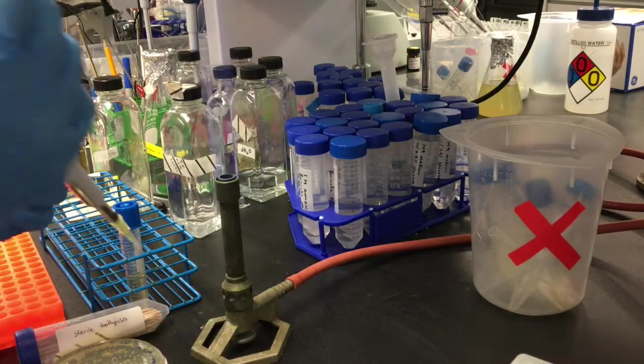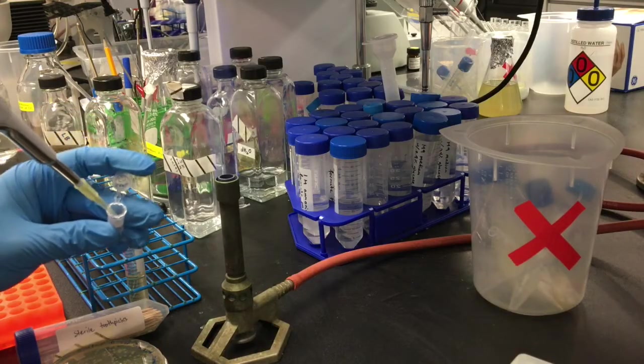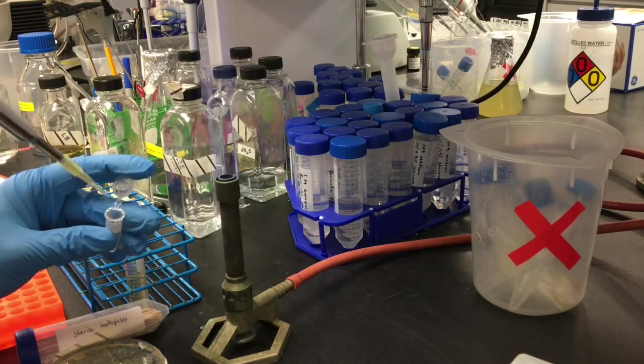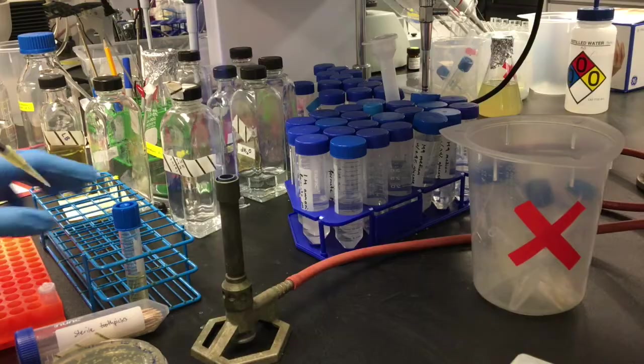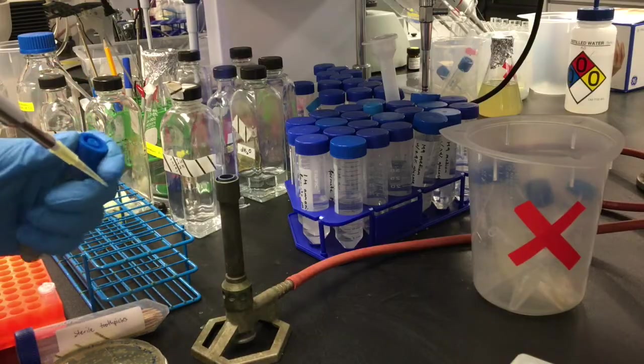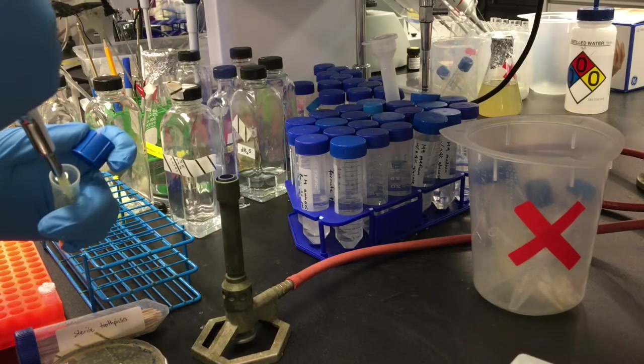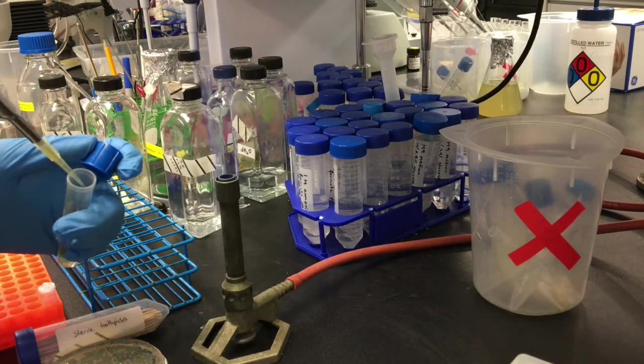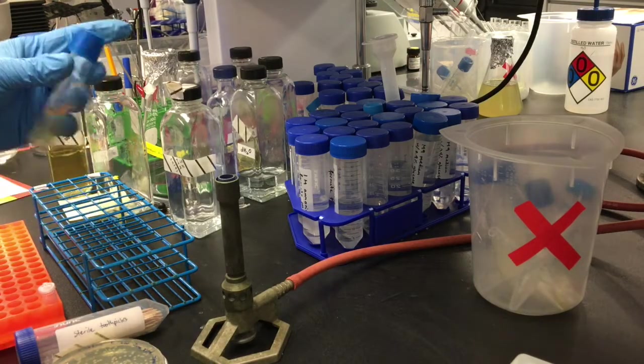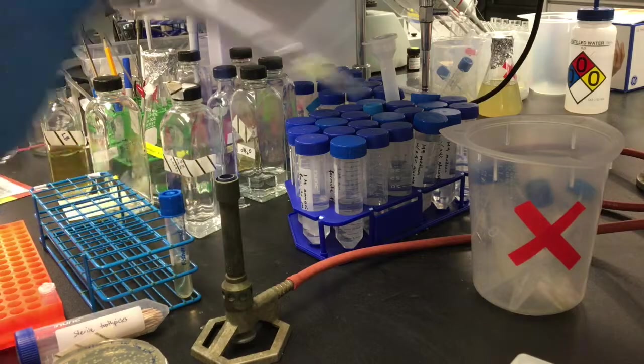Before I inoculate my starter culture, I need to add the appropriate antibiotic. From a 1,000 times concentrated stock, I will add 1 microliter of the antibiotic solution per milliliter of culture media. Mix briefly, then the tube is ready for inoculation.